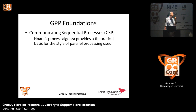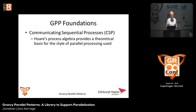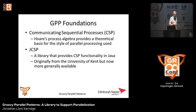So what are the foundations? The fundamental foundation is Hoare's Communicating Sequential Processes, a paper published in 1978, on which there has been continuous and continuing work ever since at the University of Oxford and other educational establishments around the world. It provides a theoretical basis for the style of parallel processing used, which means as engineers we can actually build upon that without having to force the algebra down the programmer's throat. Resulting from a community that's been going since the mid-1980s in the UK, a version of CSP was implemented for Java — originally from the University of Kent and now more generally available, for example as part of GPARs.